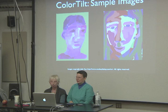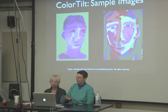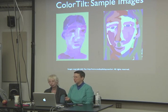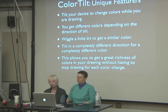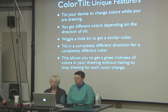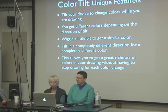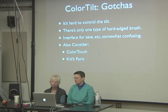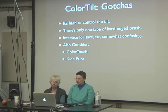Color Tilt lets you select color by tilting your device instead of going to a color wheel. It shows you in the border area what color you're getting as you tilt. You get different colors depending on the direction of tilt — it's not random, it's something you could learn. Wiggle a little for a similar color, tilt in a completely different direction for a completely different color. Gotchas: it is hard to control the tilt, there's only one type of hard-edge brush, and the save interface can be confusing.